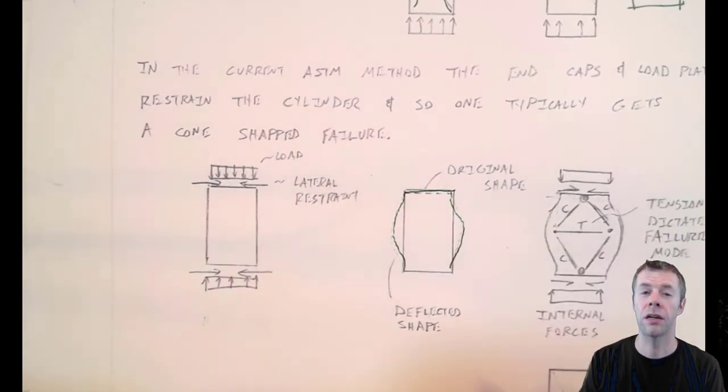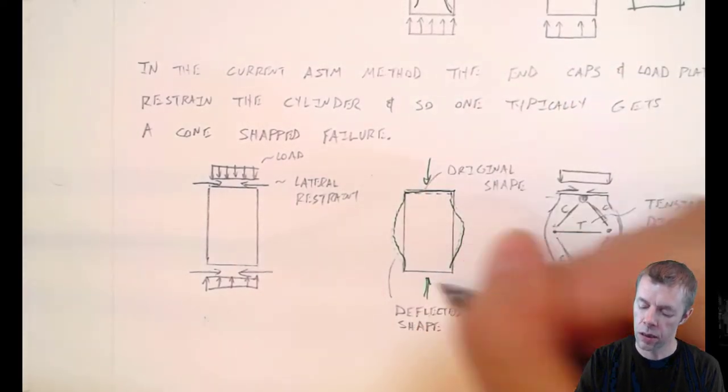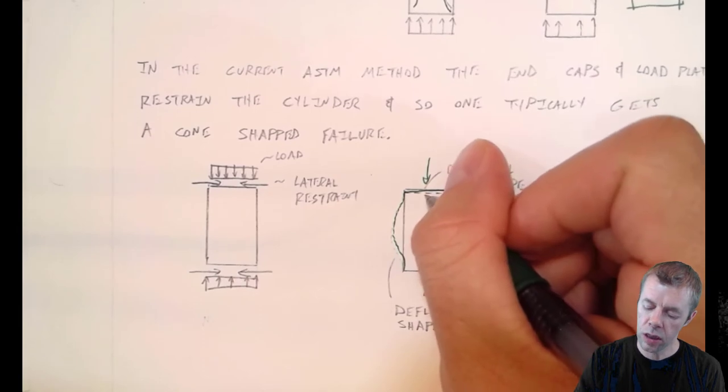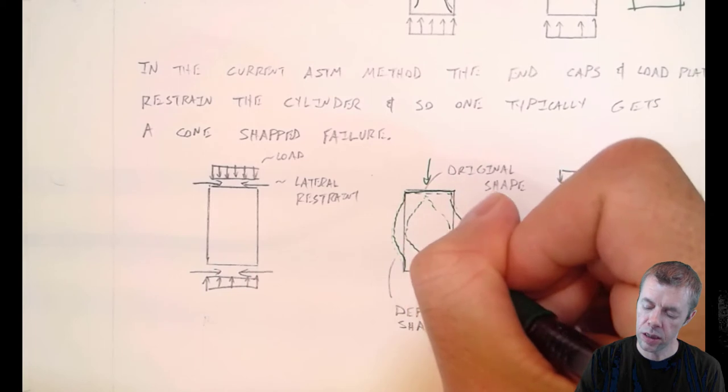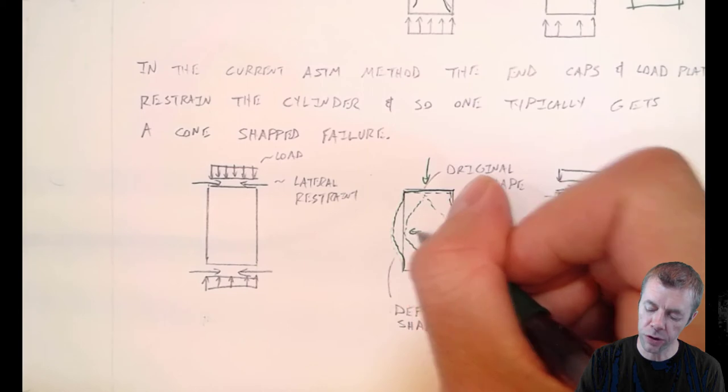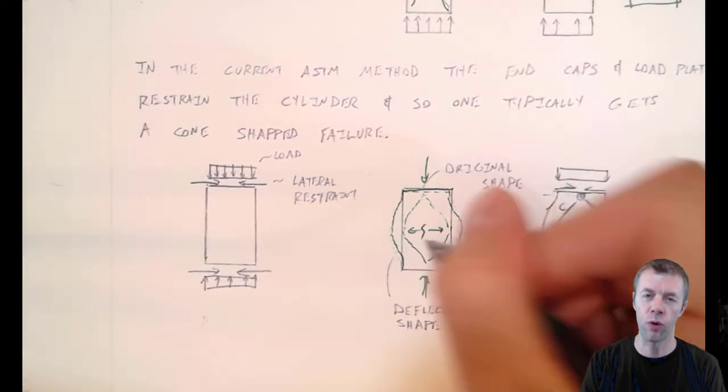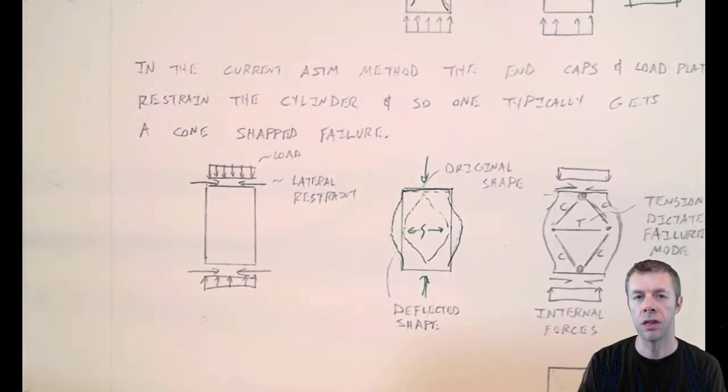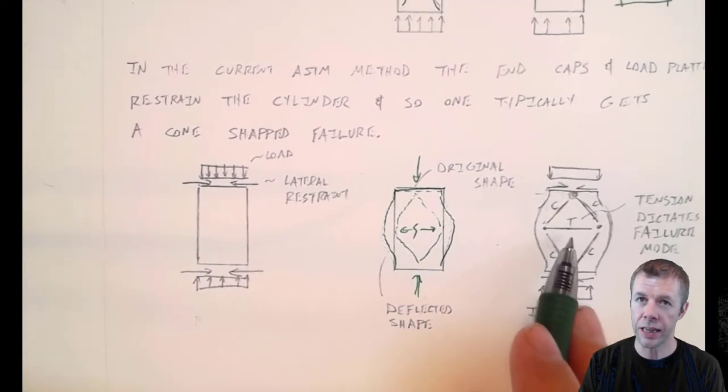But what happens is that as you're loading, this load kind of spreads through the sample and spreads back out. And that causes a tension force in the center. And that's why we see the crack forming right about the center of the sample. I've tried to draw this again over here.